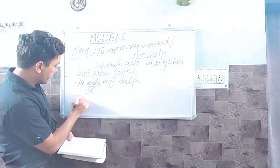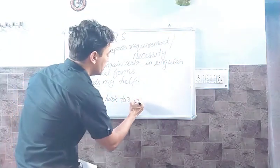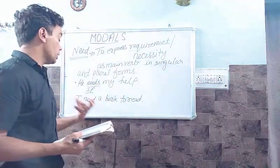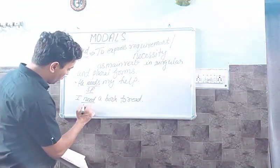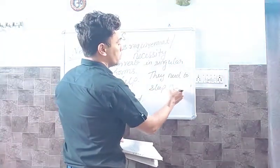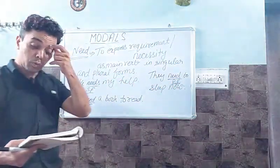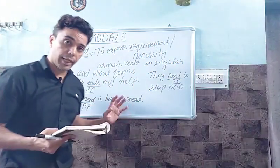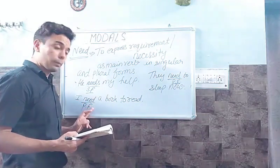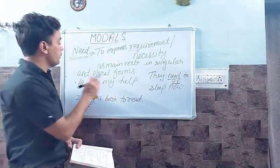With 'I,' we write: 'I need a book,' 'I need a book to read,' 'I need your help,' 'I need 500 rupees.' With plural subjects: 'They need to sleep now.' So 'he needs my help' uses singular form with 's,' while 'I need' and 'they need' use the plural form without 's.' 'Need' is used as a main verb in both singular and plural forms to express requirement.